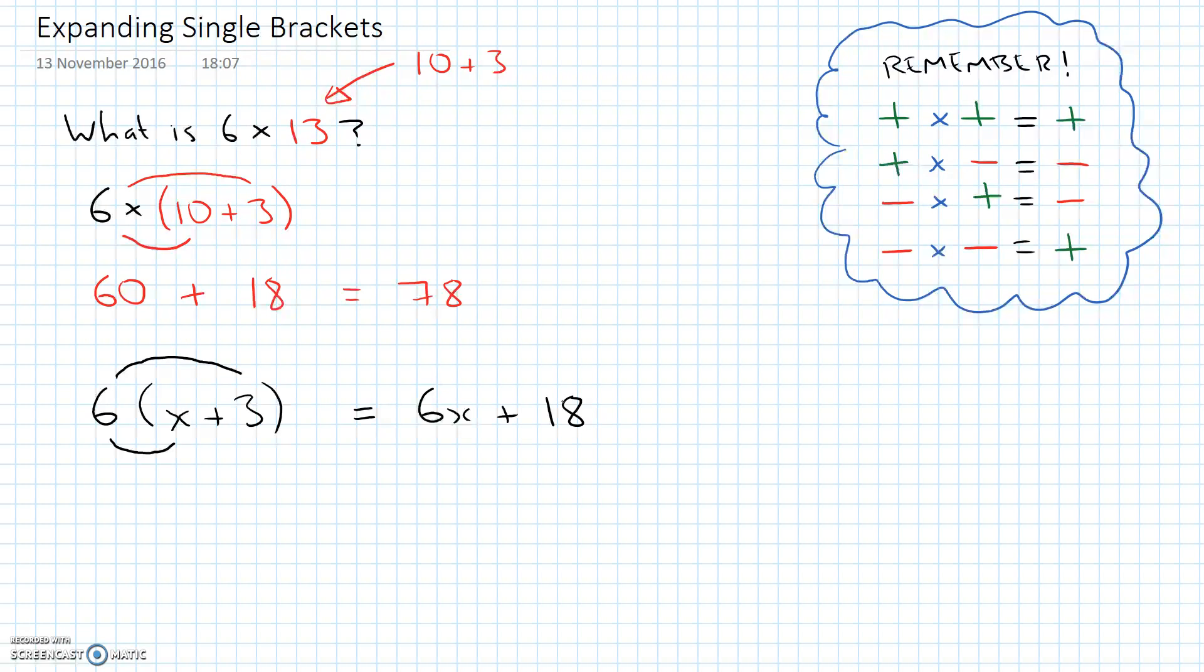So we've multiplied the term outside the brackets by each individual term inside the brackets, and then we've added the total. So let's try another example. What if we have a 5 outside the bracket, and we have x minus 2.